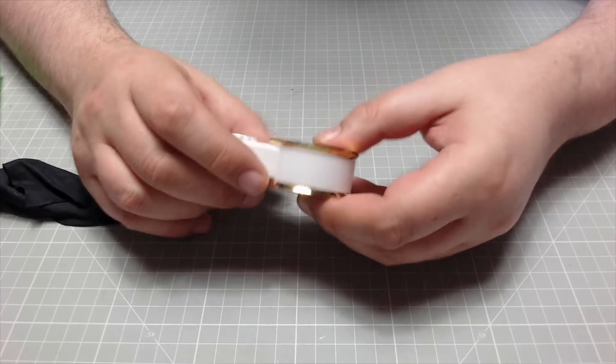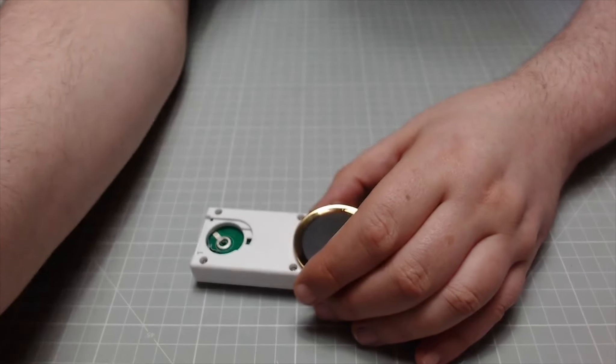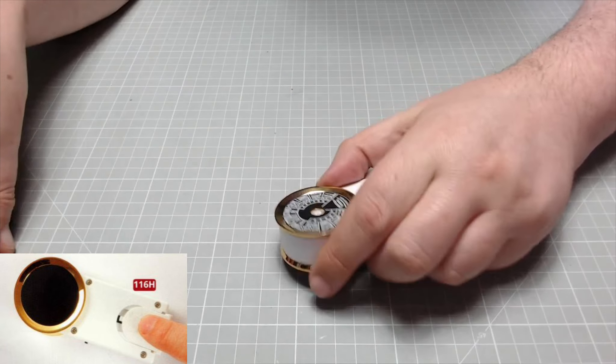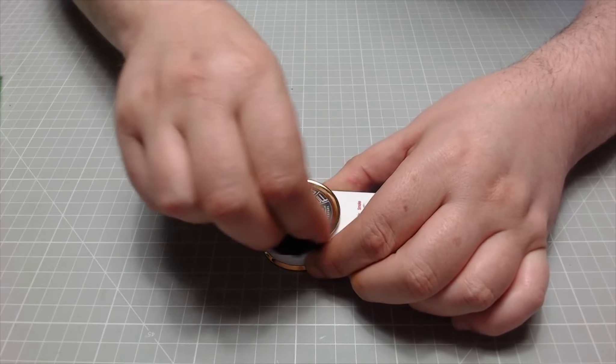So it doesn't want to go in. There we go. So that is now fitted into place. Right, so the next thing we need to do, we've got our battery cover here. That's just going to go over there like so. Now this is the next bit. We'll turn this around. Give this another quick clean.